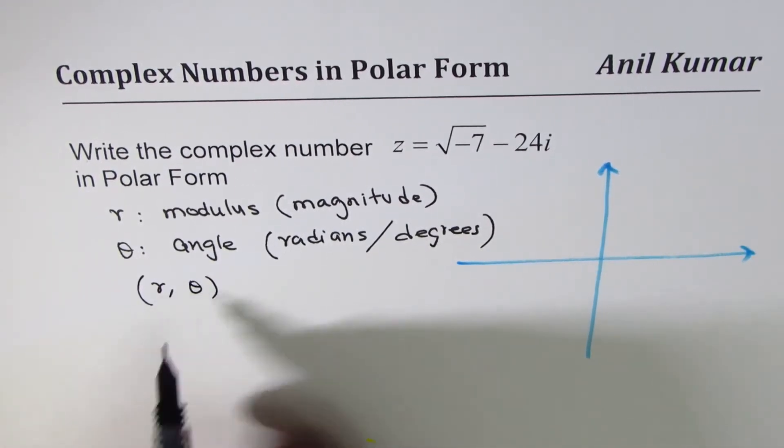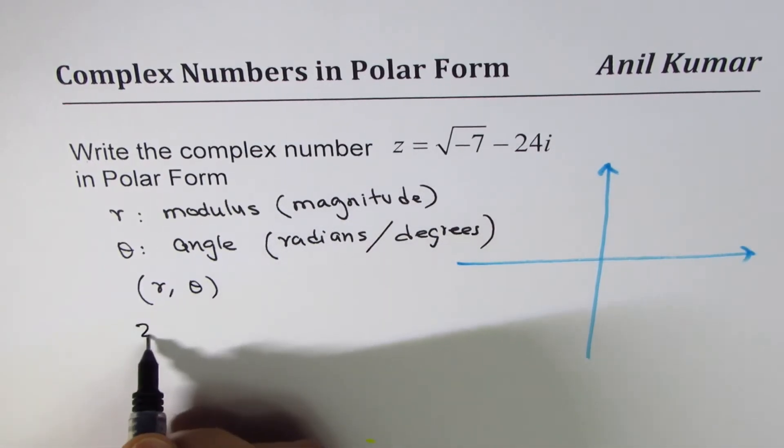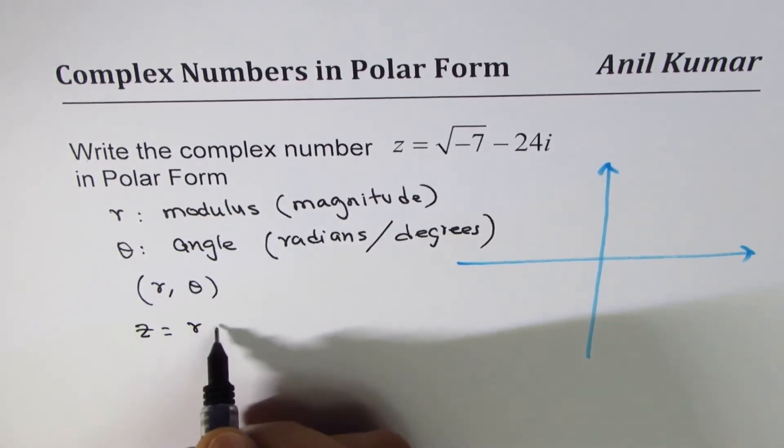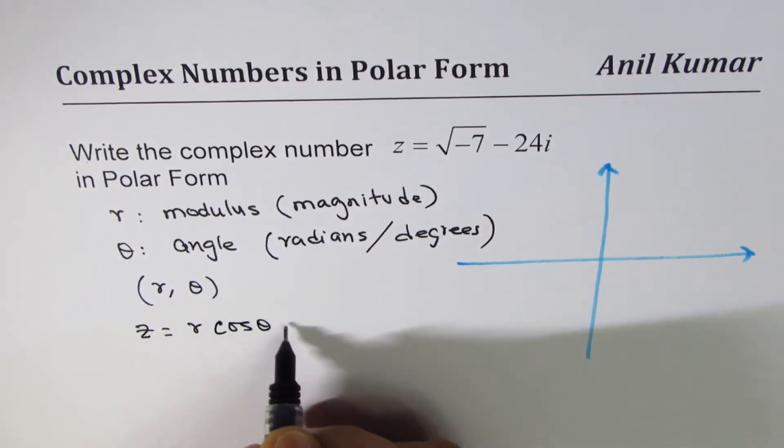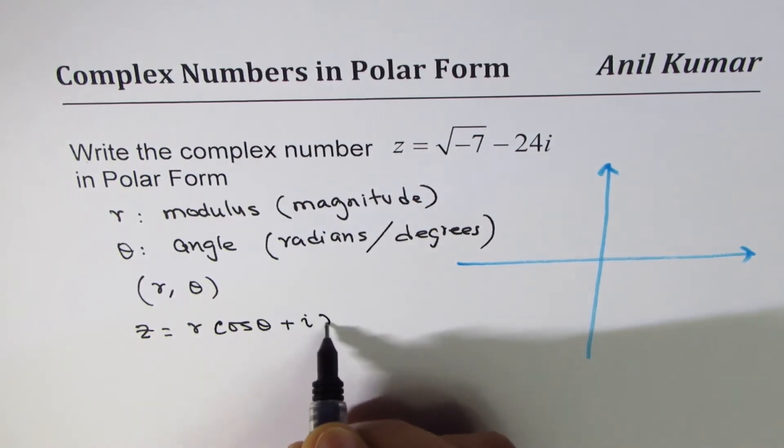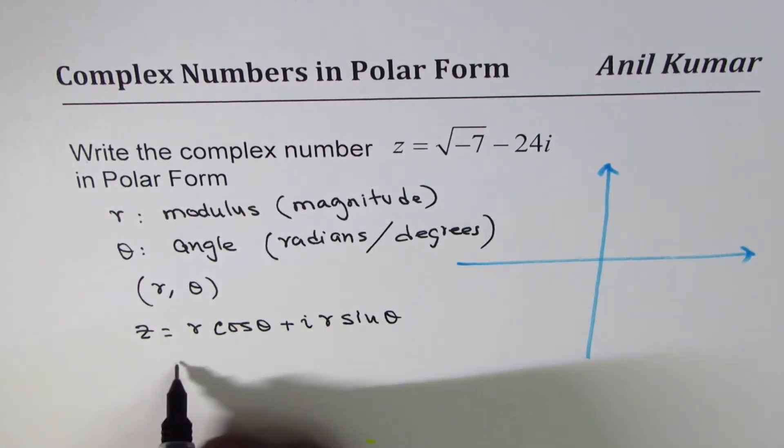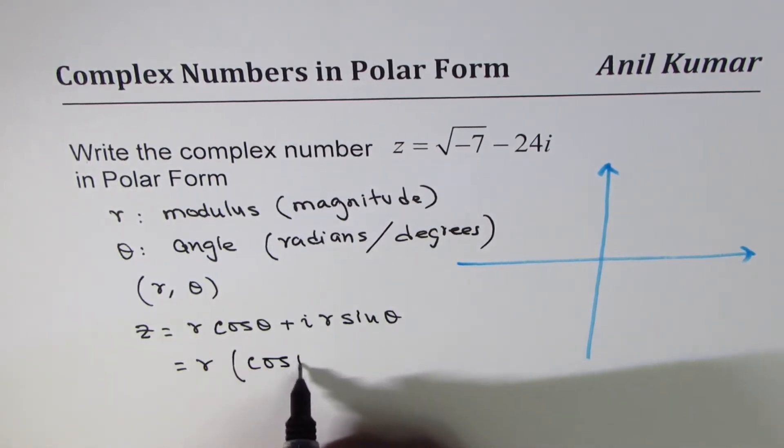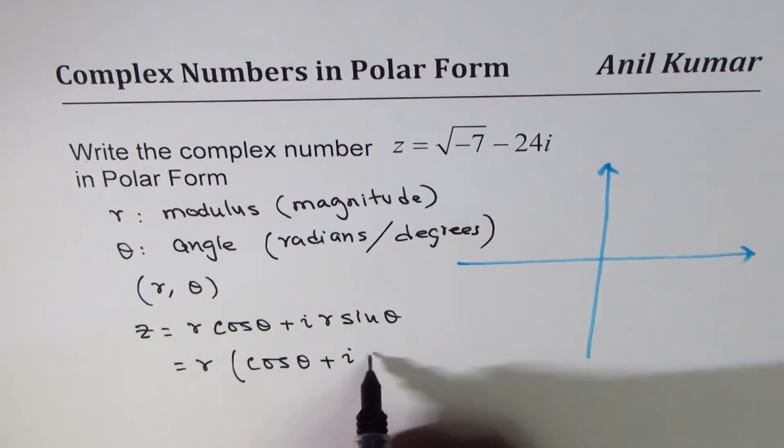When you say polar form, I could write it as (r, θ), or I could also write this complex number as r cos θ plus i r sin θ. It's also a practice to take r common and write cos θ plus i sin θ.